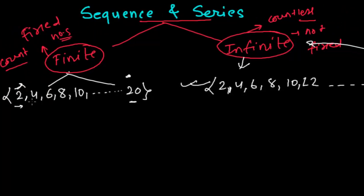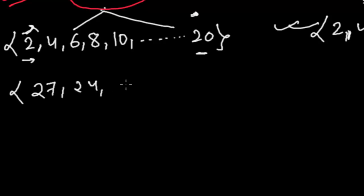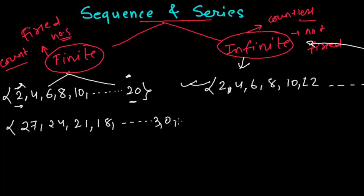Let me give another example. Suppose here we have 27, 24, 21 — it's a table of three but in decreasing order — and 18, and up to 3, then 0, minus 3, minus 6, and so on. This ends at a known point, so this is another example of a finite sequence.